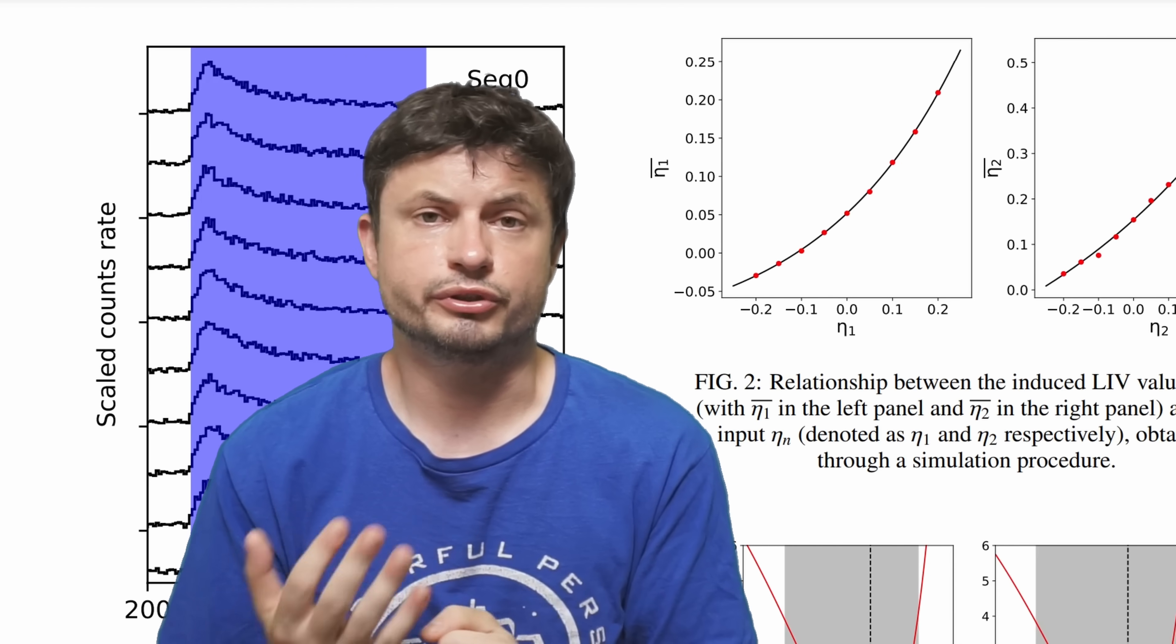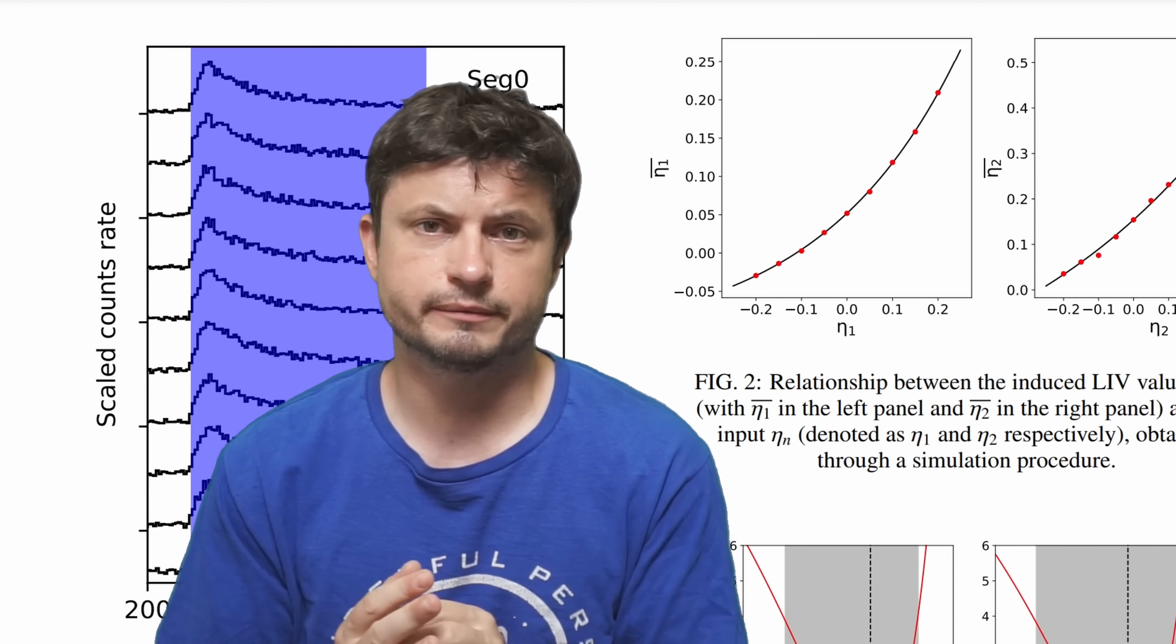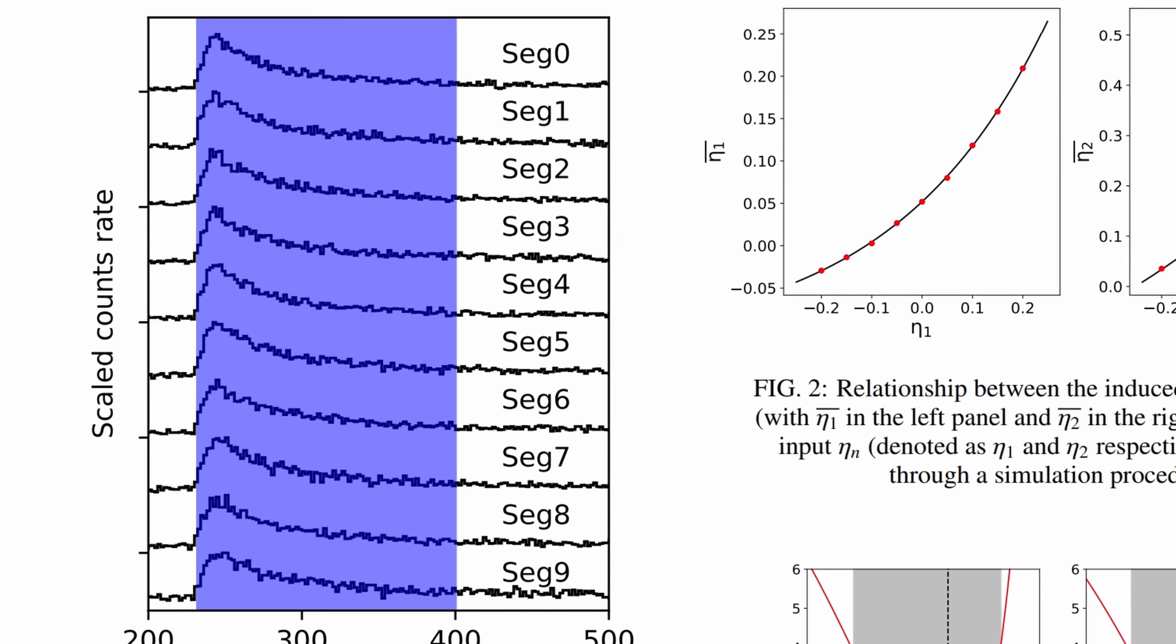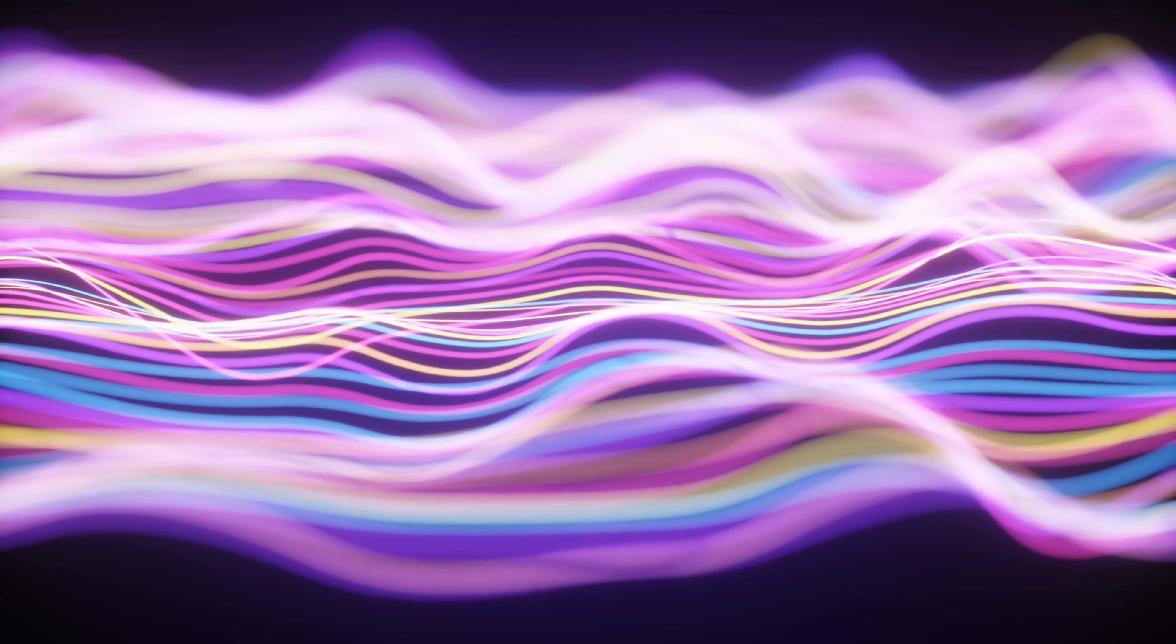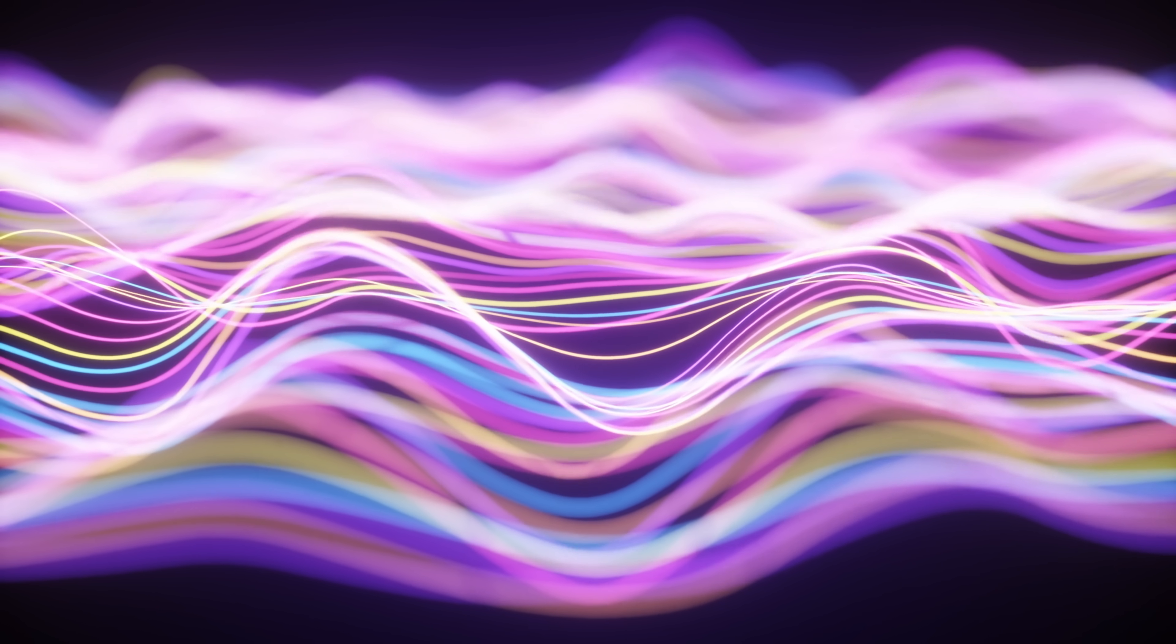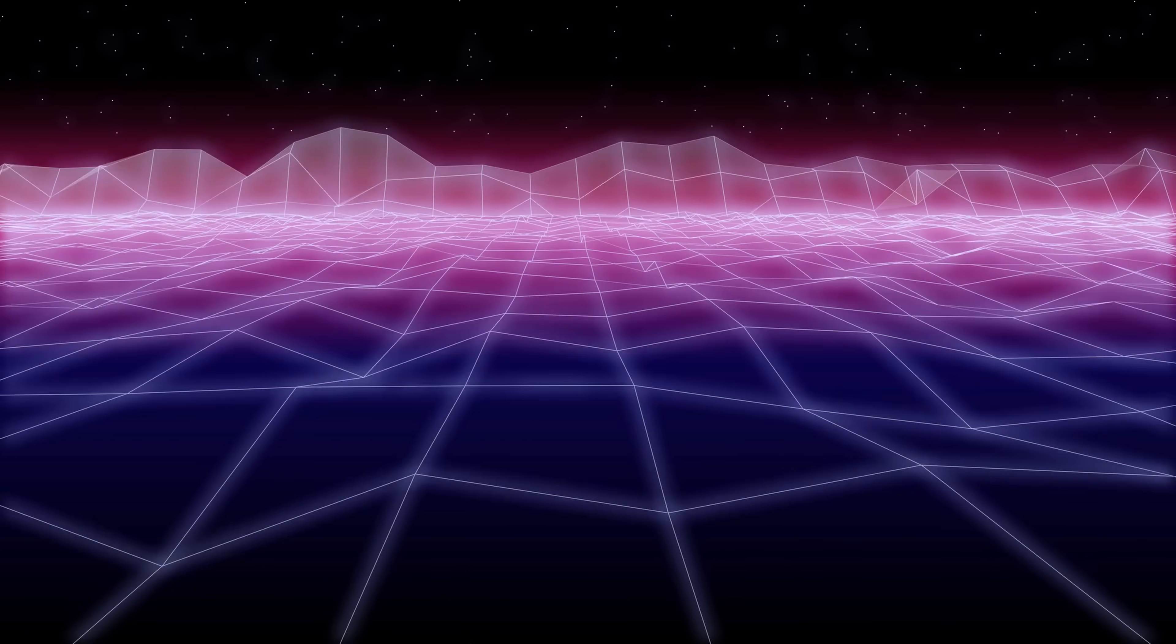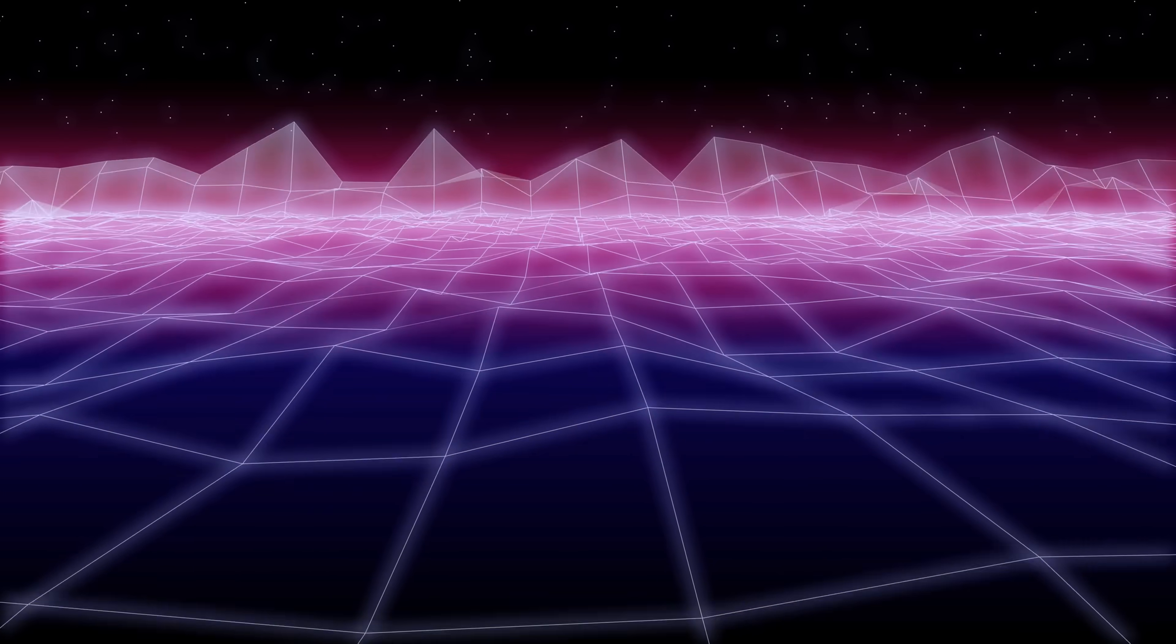And so the scientists in this study, which you can find in the description, crunched some numbers and got the results. Here they essentially compared 10 separate gamma ray bands with each band containing photons of different energy. And then they compared all of this to the overall arrival time for all of these 64,000 photons.